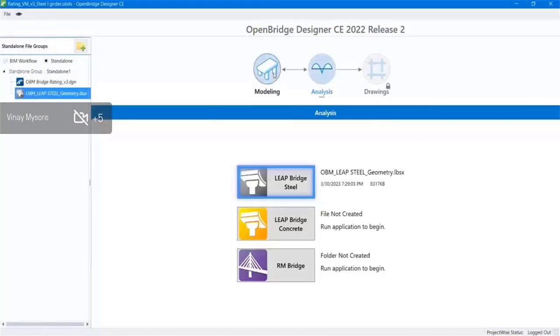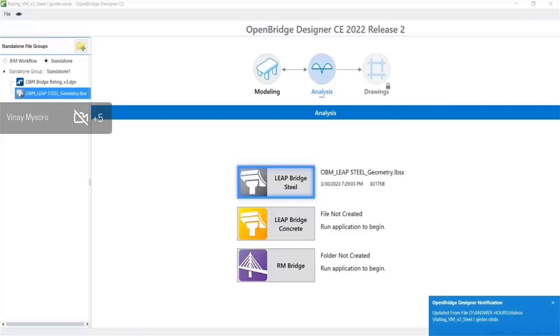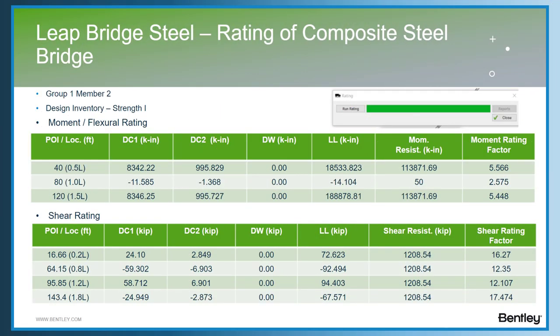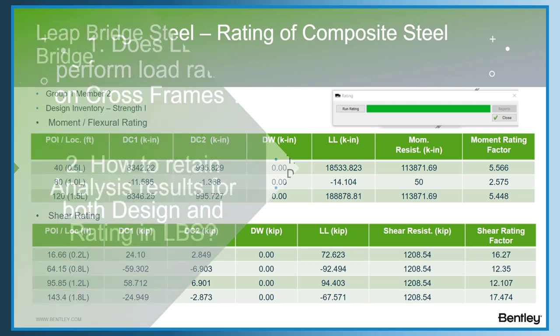Once done, they can save the whole thing under OpenBridge Designer. The report for LeeBridge Steel is quite extensive, so I populated all the information in an Excel sheet as a consolidated summary. This is for the design inventory, strength one limit state — the moment and shear rating calculation. The program provides the DC1 load, DC2, DW, and live load, and the moment capacity and moment rating factor value are calculated. Similarly, shear capacity and shear rating factor are calculated at each and every POI.